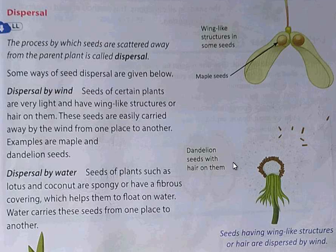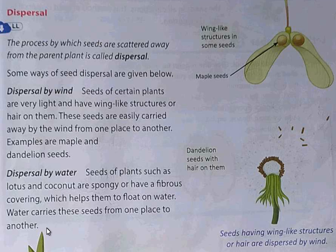Now, we will learn about dispersal by water. Seeds of plants such as lotus and coconut are spongy or have a fibrous covering which helps them to float on water. Water carries the seeds from one place to another. When you go to the beaches, you can see so many coconut trees over there. The coconut falls in the water and it floats for some days, weeks, or even years. After some time, you can see the same plant growing. This is called dispersal by water.